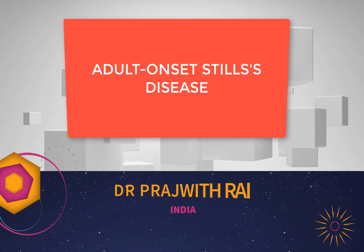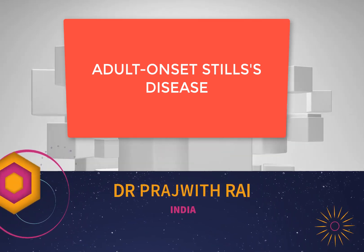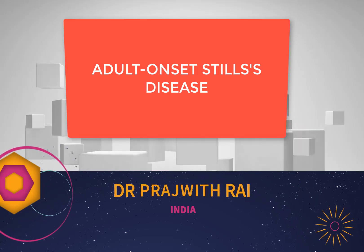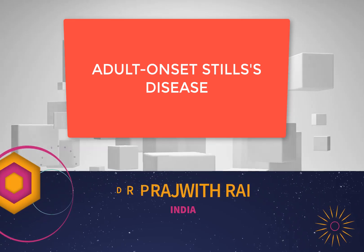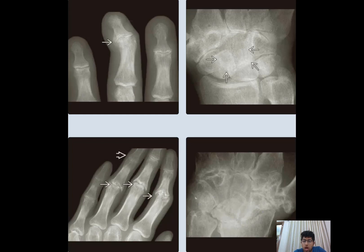Adult Still's disease is a systemic inflammatory disease featuring a triad of quotidian fever, evanescent rash, and chronic polyarthritis. There are daily spikes of fever, some skin rash, and the patient has some sort of chronic polyarthritis.